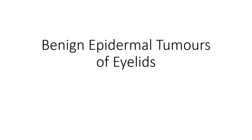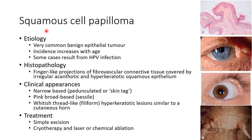Hello guys, this is Indian Medico and in this video we are going to discuss about benign epidermal tumors of eyelids. First, let us discuss about squamous cell papilloma. It is a very common benign epithelial tumor. The incidence of squamous cell papilloma increases with age — it is more common in elderly people. HPV infection has been linked with some cases of squamous cell papilloma. HPV is human papilloma virus.